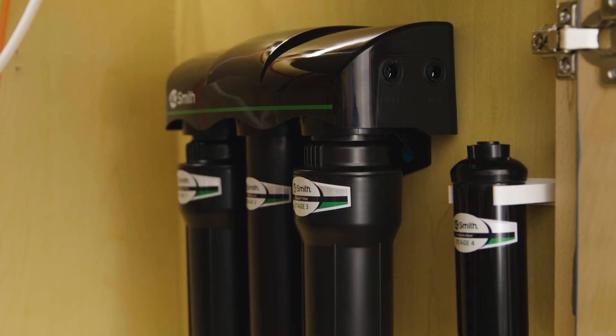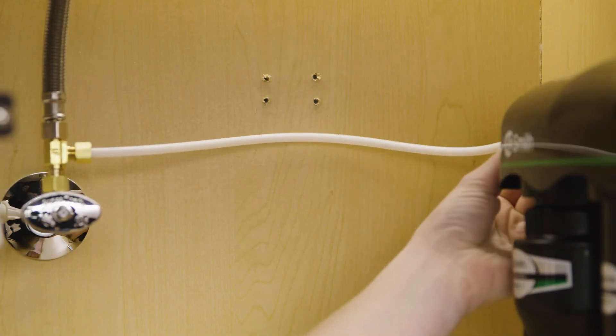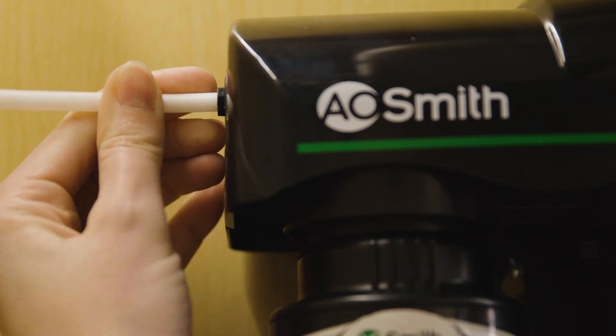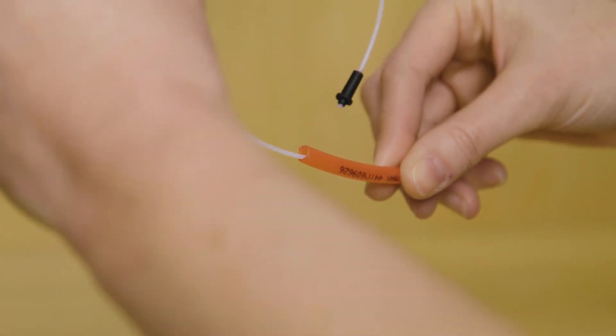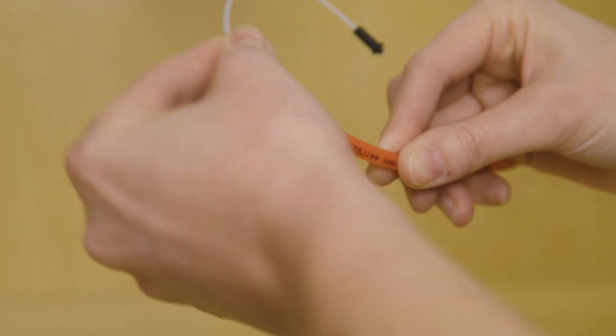It's time to connect all the tubing. Take the white tubing leading from the brass tee and insert it into the manifold port labeled inlet. You'll also need to connect the air gap to the RO membrane using the red tubing from the faucet.